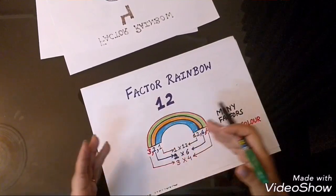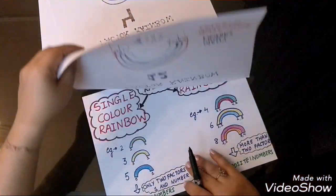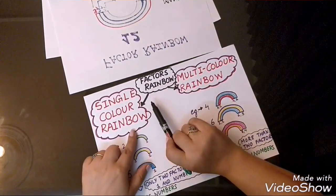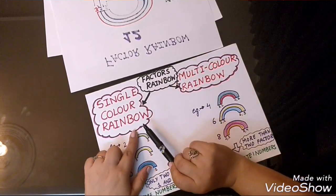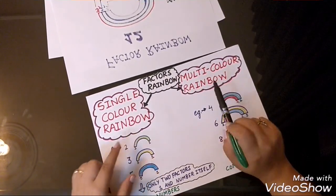One is of single color and other is of multi-color rainbow. So, there are 2 types of factor rainbows as I have told you just now. Single color rainbow, multi-color rainbow.